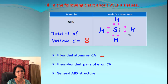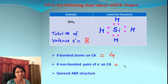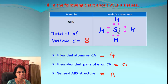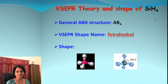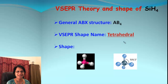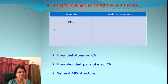For SiH₄: four hydrogen atoms are bonded to the central silicon atom. There are no non-bonded pairs of electrons, so X equals zero. The ABX formula: A equals one, B equals four, X equals zero (not written). The molecule SiH₄ has ABX structure AB4, giving a tetrahedral VSEPR shape, and this is what it looks like in 3D.